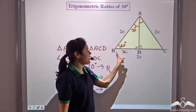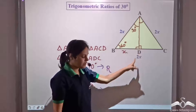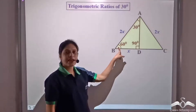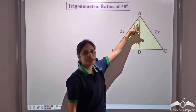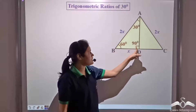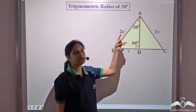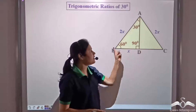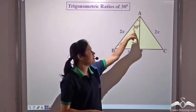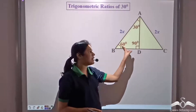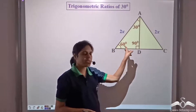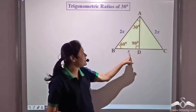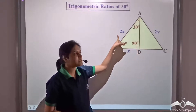For triangle ABD, angle B is 60 degree, angle A is 30 degree, and angle D is 90 degree. The side BD is x and AB is 2x. So we have a right angle triangle with angles 30, 60, and 90 degrees.